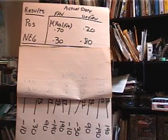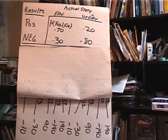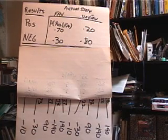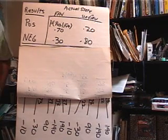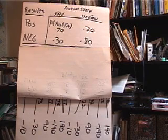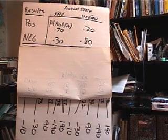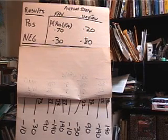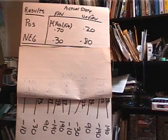Let's continue with our preview example where we were deciding on whether to build a small facility, a large facility, or do nothing. Let's say we could go ahead and conduct a study — perhaps we could hire some consultants who would go out and do a survey, asking people if they would buy our product or not. Let's say this study cost $10,000.